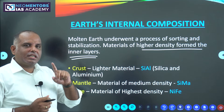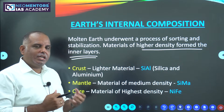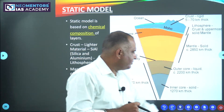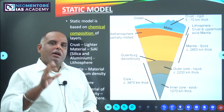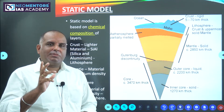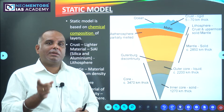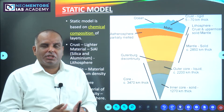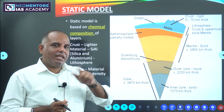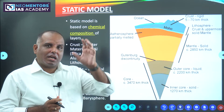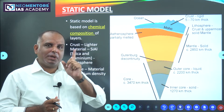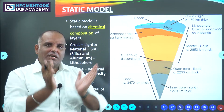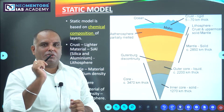When discussing crust, mantle, and core, we need to understand on what basis we classified them into these layers. We can classify materials based on their chemical composition or their mechanical properties. If classifying based on chemical composition, it is called a static model. The static model classifies the earth's internal composition based on chemical composition.